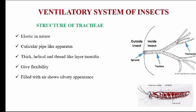Let's talk about the structure of tracheae. The tracheae are elastic in nature. Tracheae are the larger tubes of the tracheal system. Usually, these have finer branches. The smallest branch has a diameter of a few microns. As tracheae are elastic in nature, flexibility is provided, and the trachea has thick helical rings of spirals present.